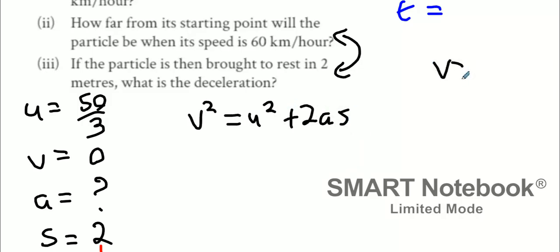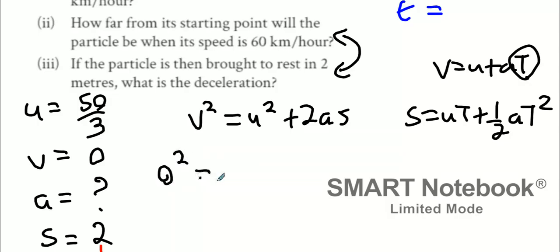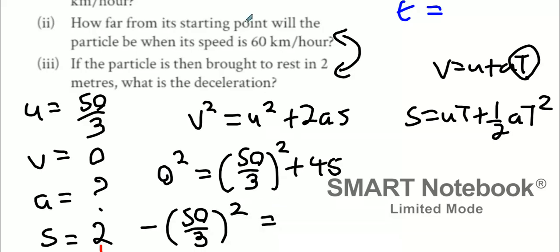Some of you might use V equals U plus AT. You might find out the T value. And then you could put that into S equals UT plus a half AT squared. And that's a two-step process versus our one-step process. You do it two different ways. I'm happy to do it the easy way. It's safe to say A is going to be negative. Why does A have to be negative? And now what we're going to say is it's minus 50 over 3 squared equals 4S.